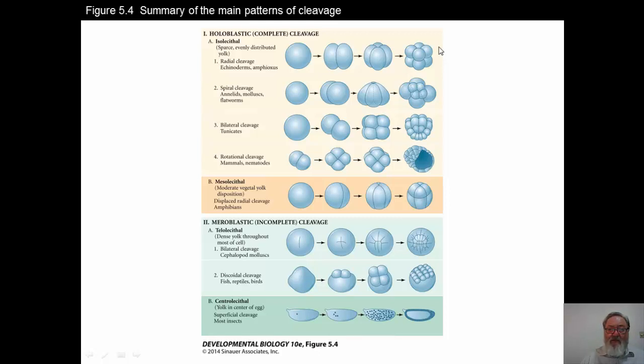And then there's mesolecithal, where down here you can see that it will go through in some parts of the cell in the north-south direction. However, when it goes equatorially, there are larger cells below than above because there's more yolk in those cells. That's the vegetal pole of the amphibian egg. And so it does more cleaving on the top in the animal pole than on the bottom, the vegetal pole.